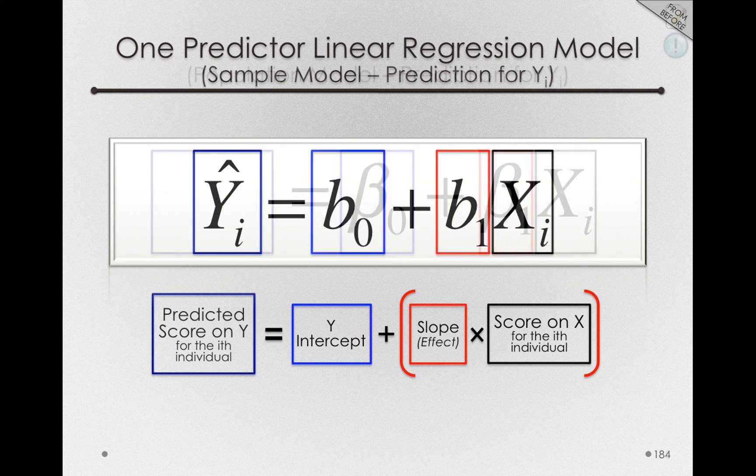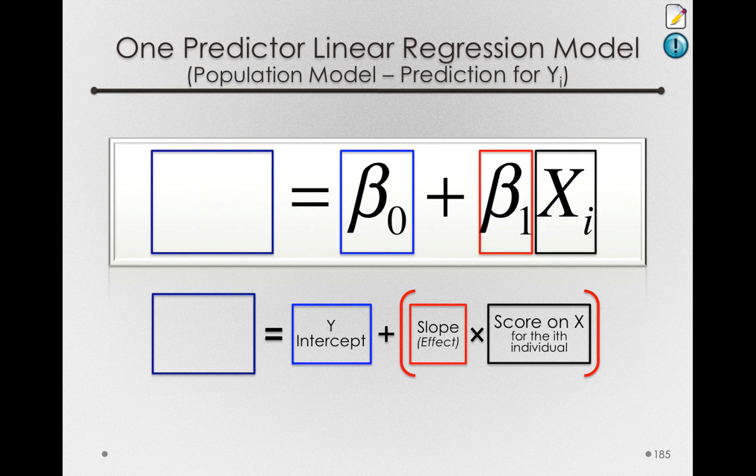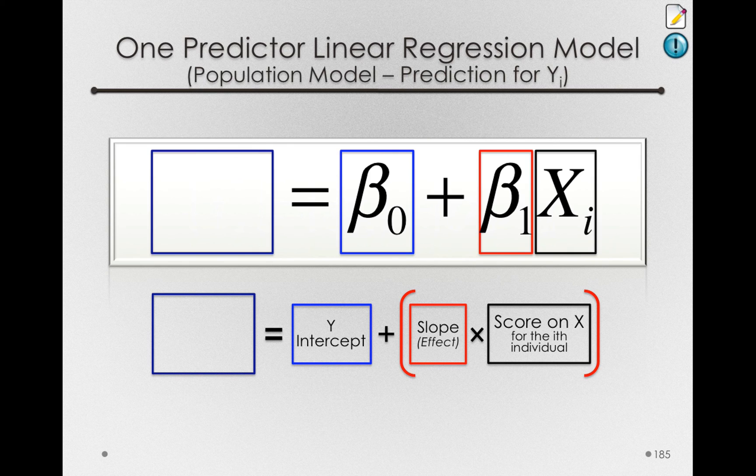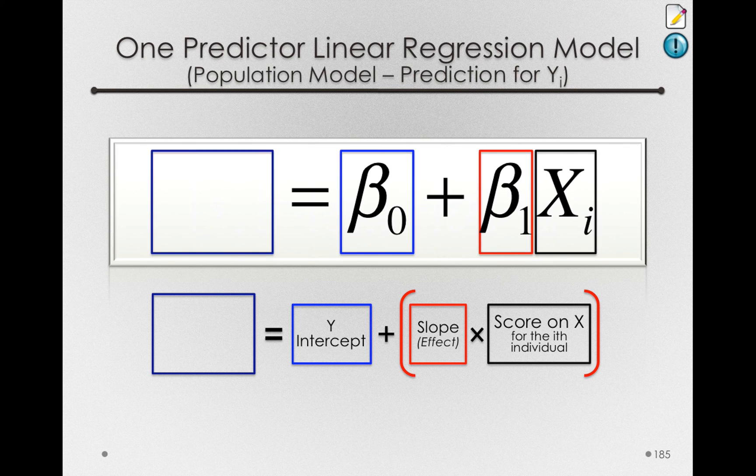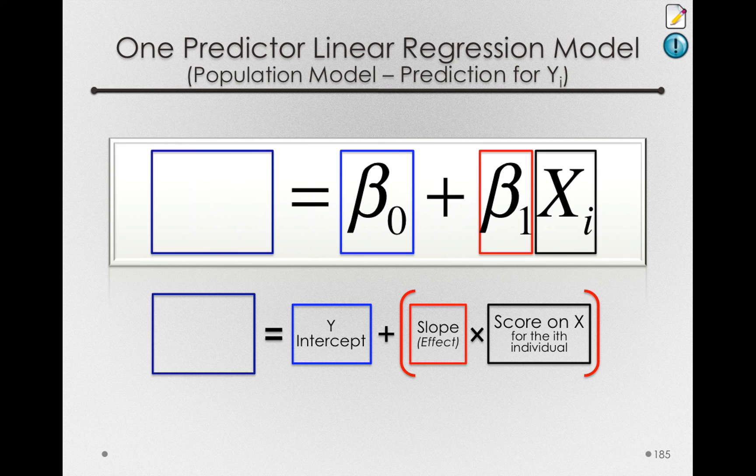Now there is a corresponding version of this formula that refers to the population. In the population, we are predicting something with beta 0, the true population intercept, plus beta 1, the true population slope, multiplied by the score on x for an individual.